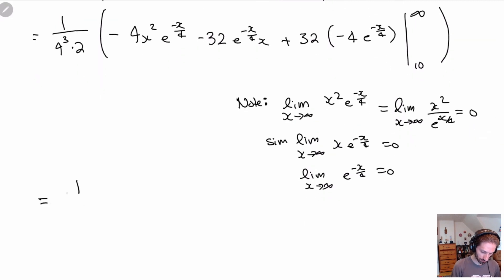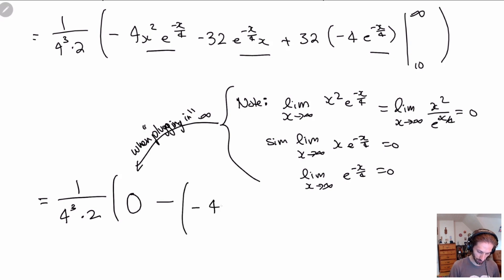And so what we have is 1 over 4 to the 3 times 2. The infinity, notice how here, this, this, and this are all 0. So infinity is just giving us 0. So what we'll have is 0 minus, here I'll note we're plugging in infinity, plugging in infinity. We get 0, and then we're left with the 10 parts. So here I have minus 4, 10 squared times e to the minus 10 over 4, minus 32 times e to the minus 10 over 4 times 10, plus 32, what's 32 times minus 4? It's minus 128, e to the minus 10 over 4.